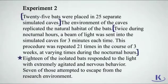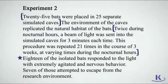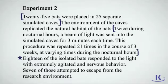Experiment 2: 25 bats were placed in 25 separate simulated caves. The environment of the caves replicated the natural habitat of the bats. Twice during nocturnal hours, a beam of light was sent into the simulated caves for 3 minutes each time. This procedure was repeated 21 times over 3 weeks, at varying times during the nocturnal hours. 18 of the isolated bats responded to the light with extremely agitated and nervous behavior, and seven of those attempted to escape from the research environment.